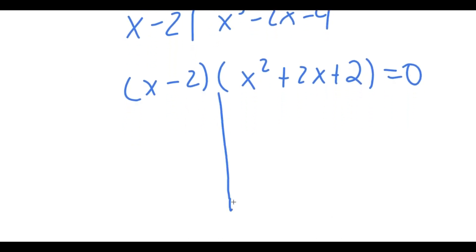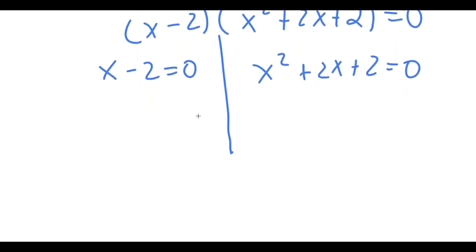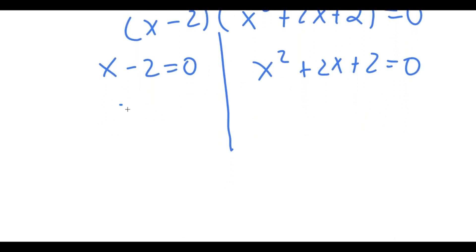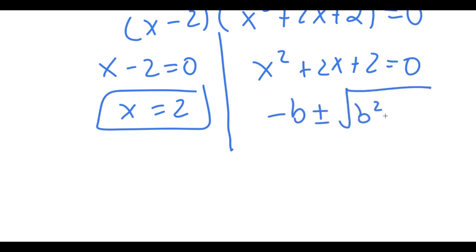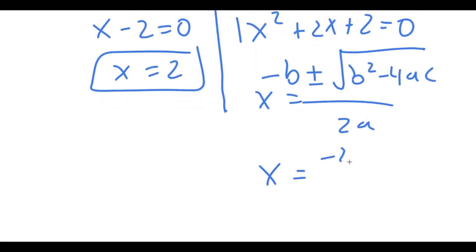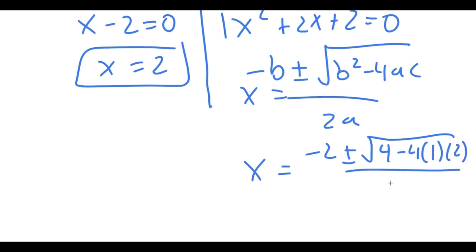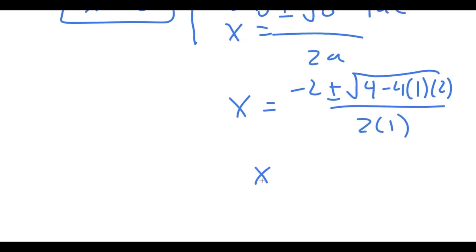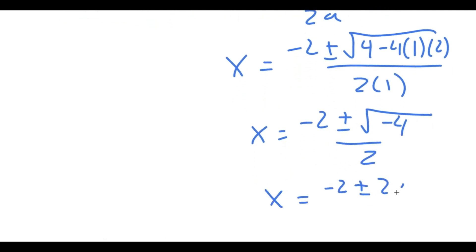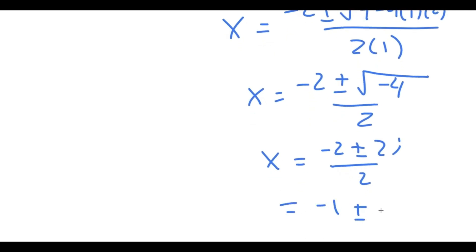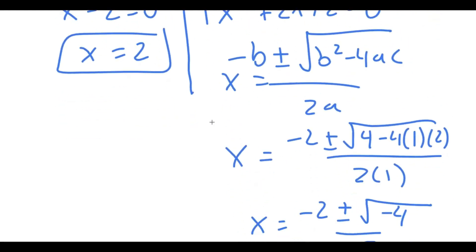So x squared plus 2x plus 2 equals 0 gives me two more equations. For x minus 2 equals 0, x is obviously equal to 2. For x squared plus 2x plus 2 equals 0, I use the quadratic formula: x equals negative 2 plus or minus the square root of 4 minus 4 times 1 times 2, all over 2. This equals negative 2 plus or minus the square root of negative 4 over 2, which is negative 2 plus or minus 2i over 2, which equals negative 1 plus or minus i. So these are my three solutions.